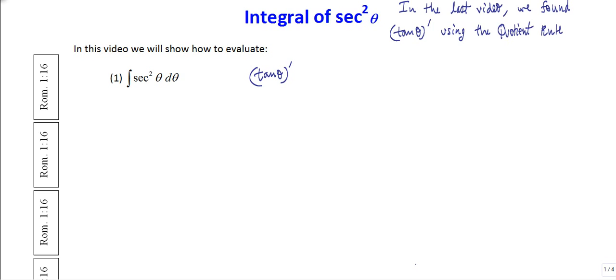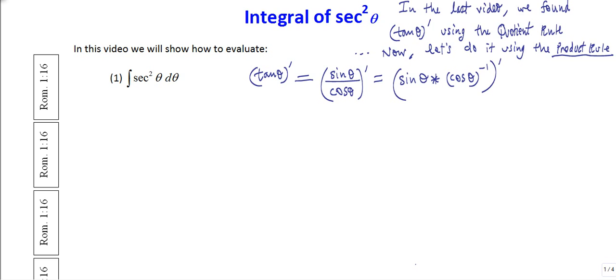In this video, let's now do it using the product rule. So let's illustrate how we could do the very same thing by a slightly different approach. We know that tangent of theta can be written as the quotient of sine to cos. I'm going to take the derivative of that, and I'm going to write this as the product of sine times cos of theta to the minus 1 power.